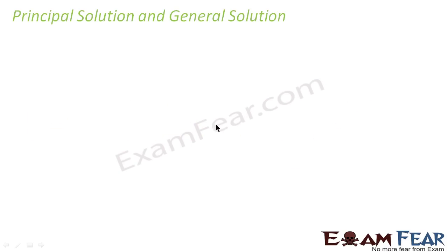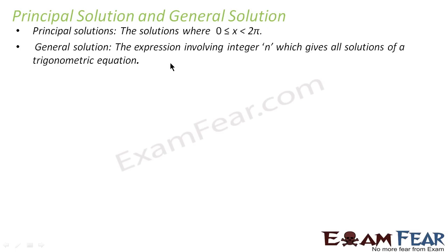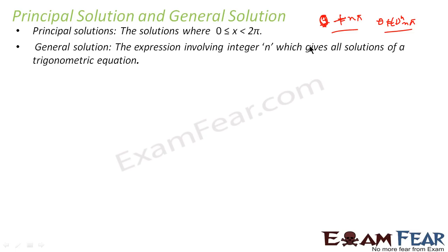Let me introduce the concept of principal solution and general solution. Principal solution is any solution between 0 and 2π. General solution will have all the possible solutions and will involve an integer n, of the form theta plus n·pi or theta plus minus 1 to the power n times pi. This kind of solution is called general solution, and involves all the possible solutions for a given trigonometric equation.